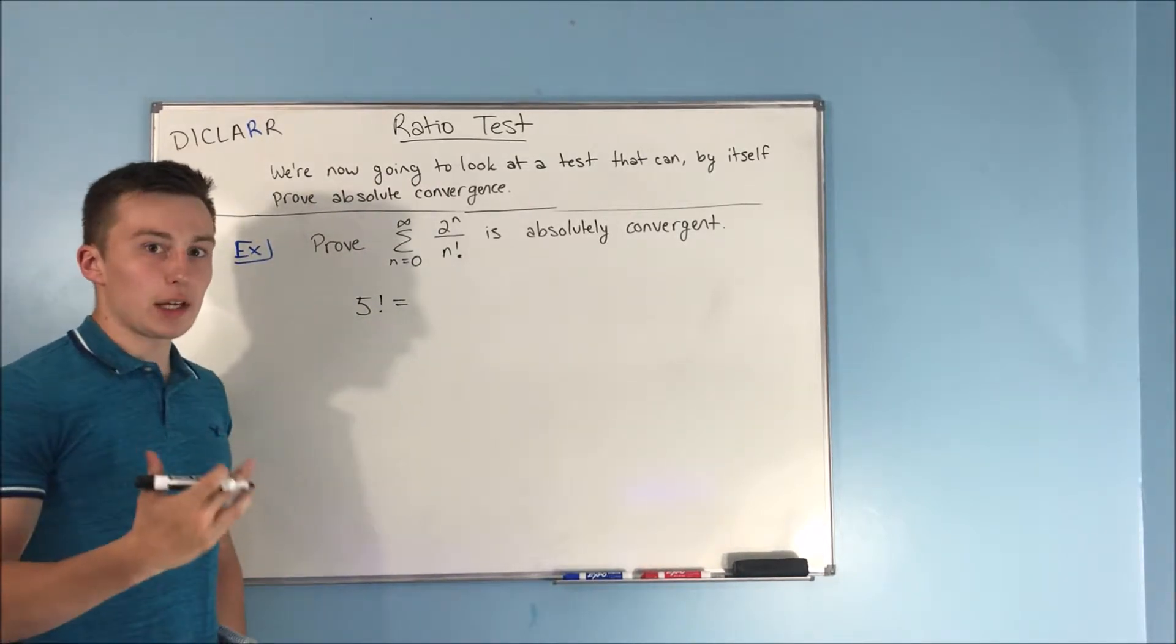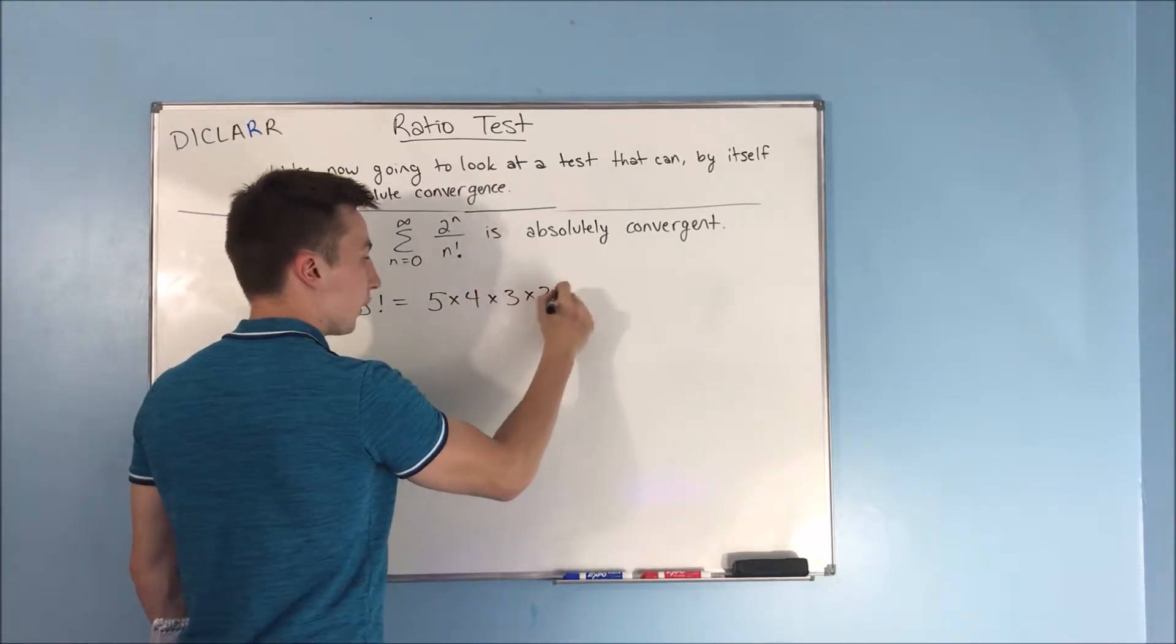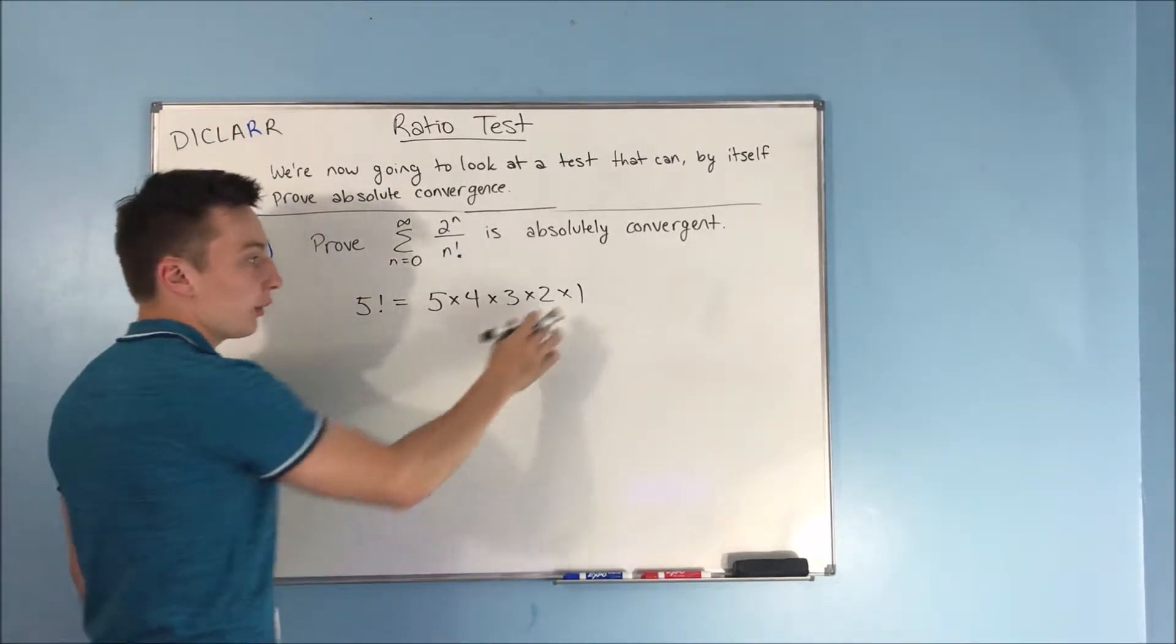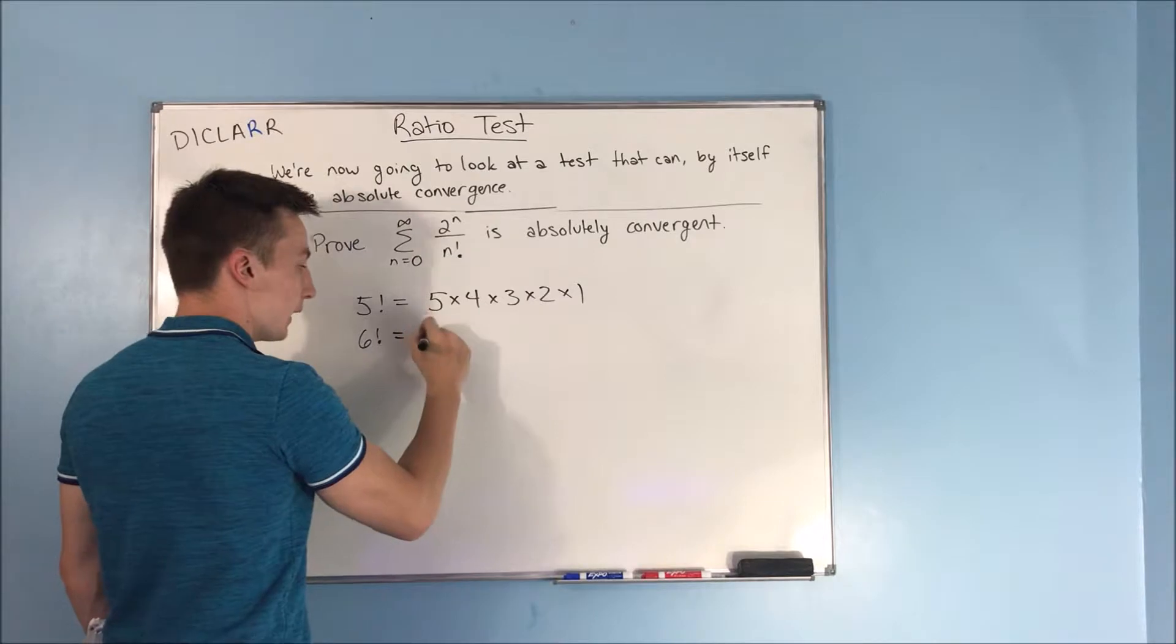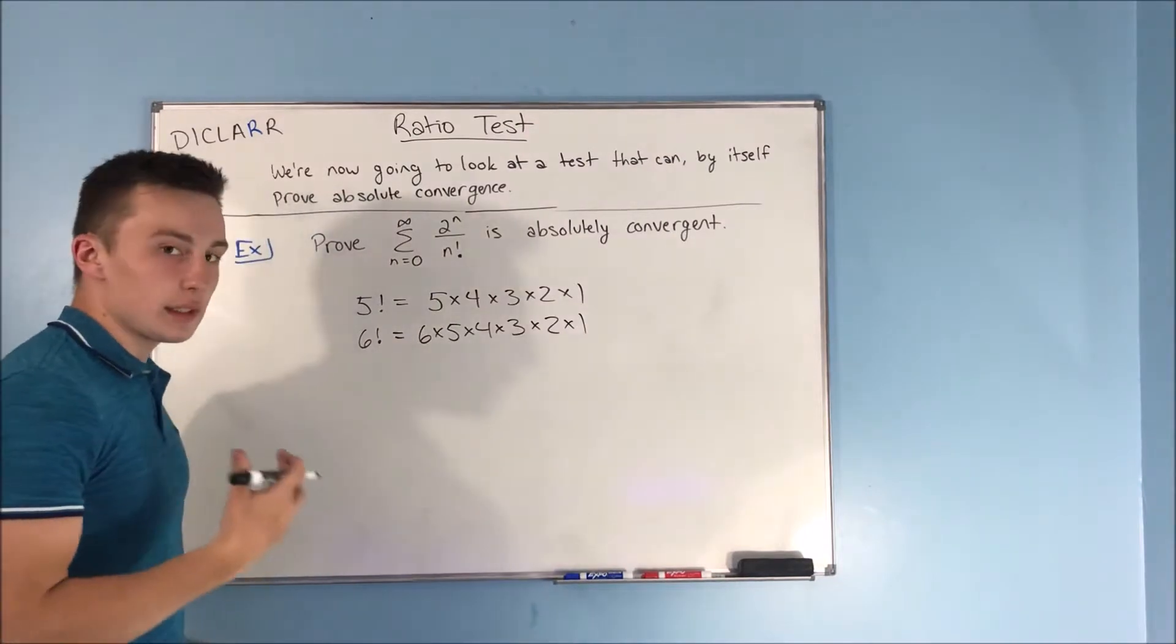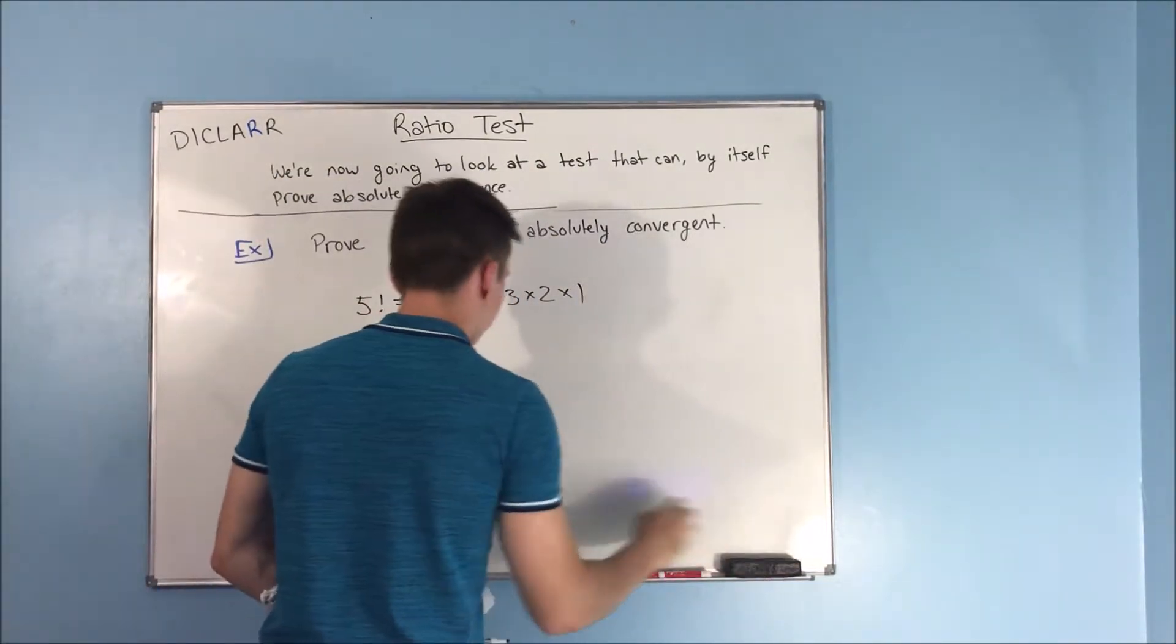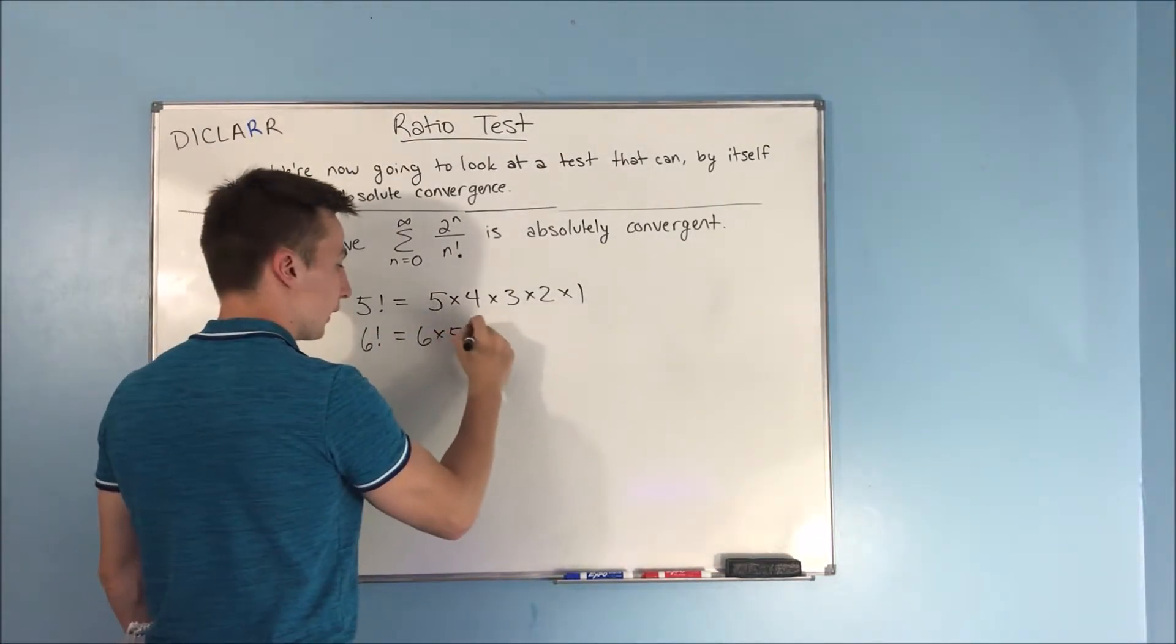If you have something like five factorial, all that's really saying is that you're doing five times four times three times two times one. So you're doing that number times all the numbers that come before it until you get to one. If you have a six factorial, that's going to be six times five times four times three times two times one.